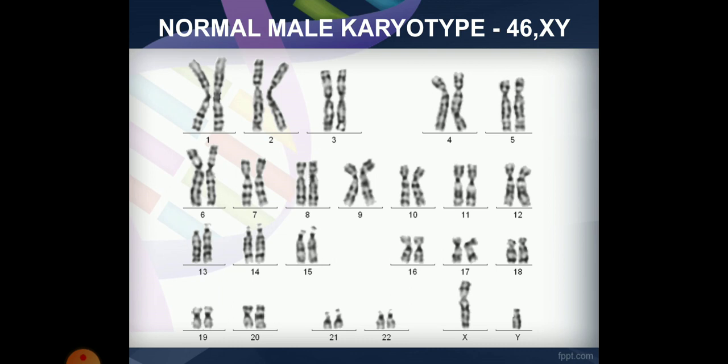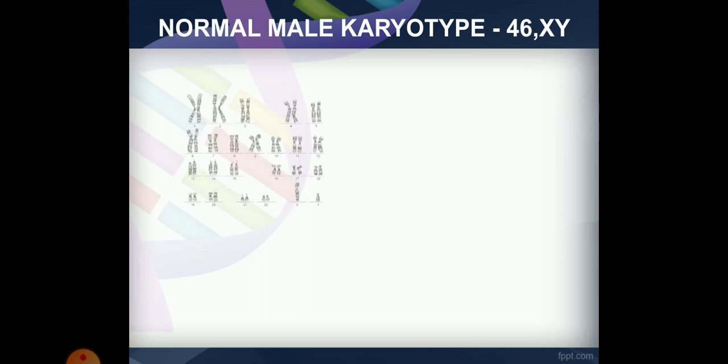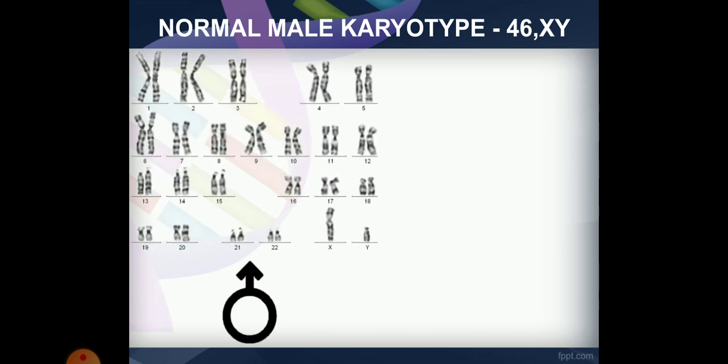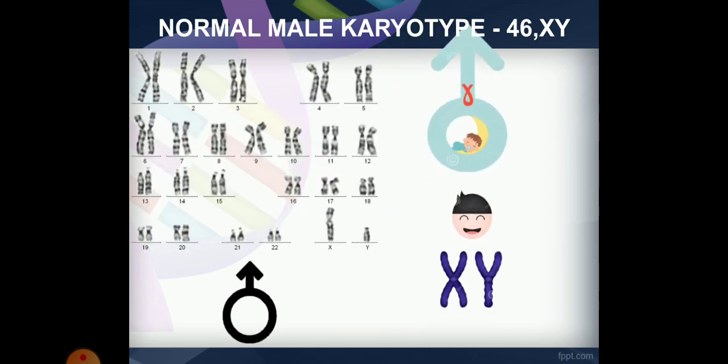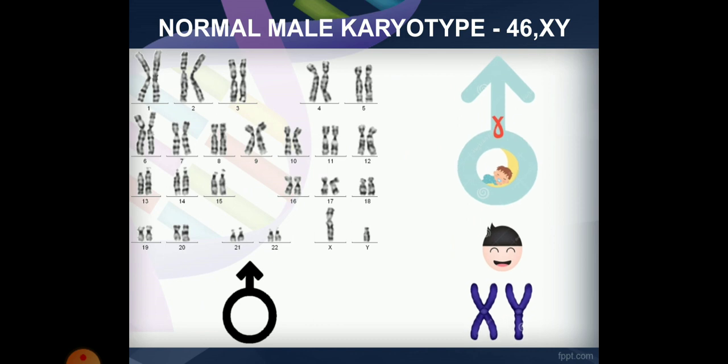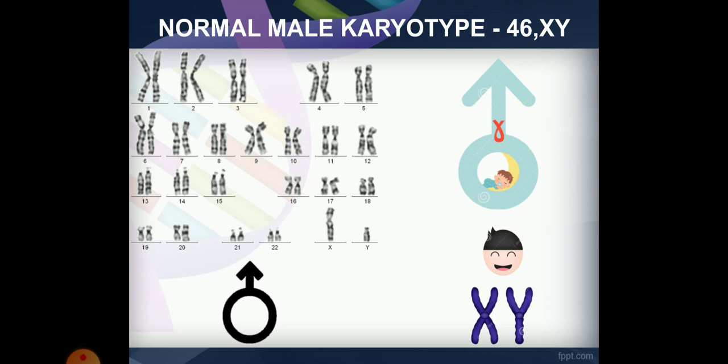For the male karyotype, the chromosome is called X and Y instead of X and X. So the male is having XY. As a karyotype, the total number of chromosomes is 46: male is XY, and female is XX.